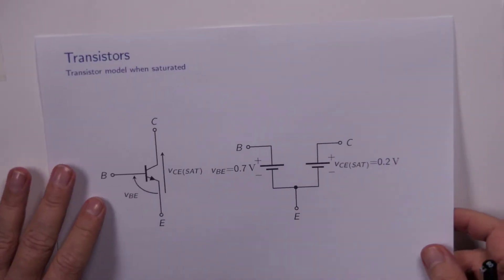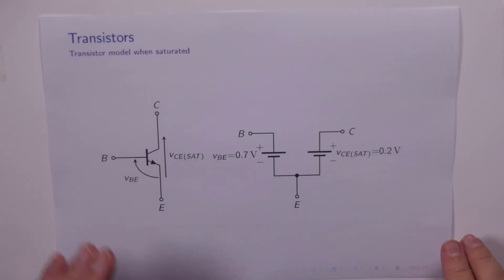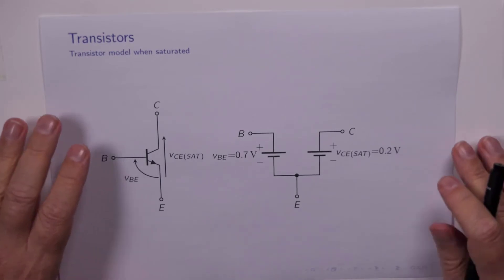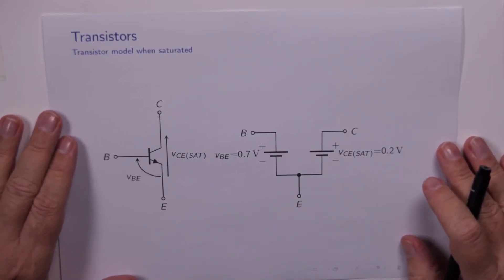The next most straightforward model is for saturation. Now remember that saturation is when the base current is so high, it drives the collector current high, which causes the collector emitter voltage to drop, but it can't drop indefinitely. Instead it hits a hard limit when the load line intersects with the uppermost IC versus VCE curve.